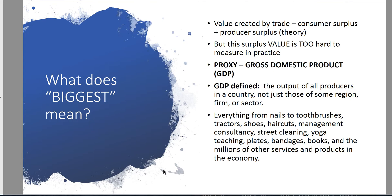So what does 'biggest' mean in this context? In the last lecture, we talked about value created by trade as the way to estimate economic value — consumer surplus plus producer surplus. We're looking for those areas under the demand curve to get an idea of what economic value is. But in practice, this surplus value is really too much of a challenge to measure for every trade in every country for every day and year and aggregate it up. So as a proxy, economists turn to something we can actually measure, which is called gross domestic product, or GDP.